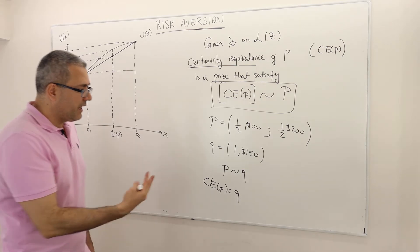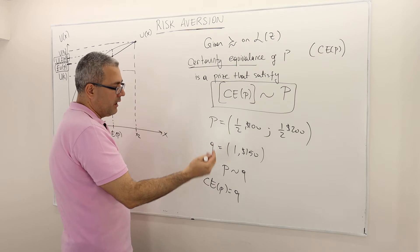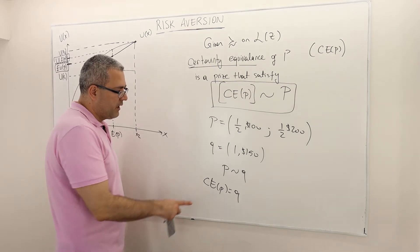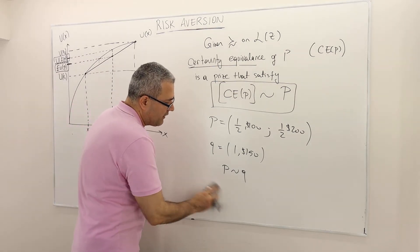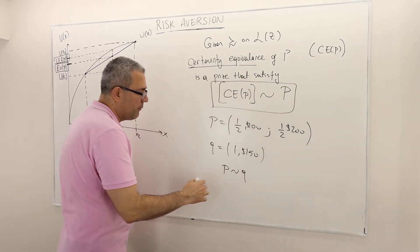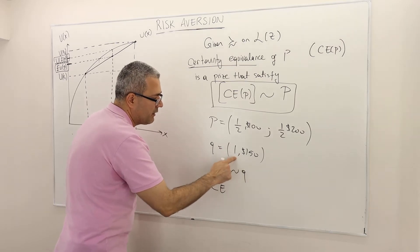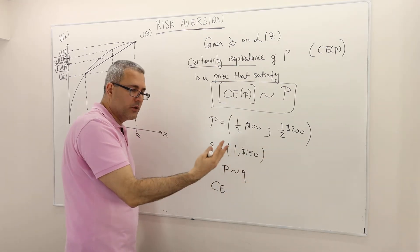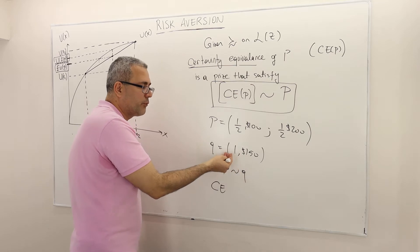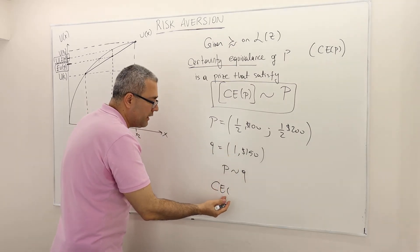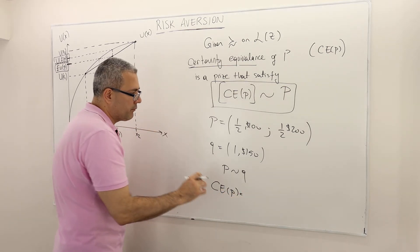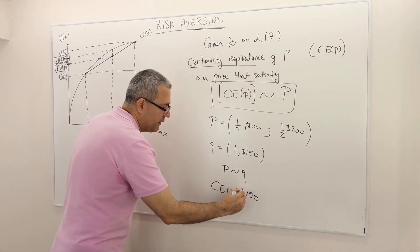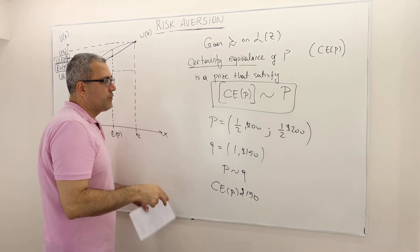That's not quite correct notation-wise, because certainty equivalence is a real number. It's not a lottery, because a lottery has at least two components: a prize and the probability of that prize. So a certainty equivalence of a lottery is just a real number. In this case, it's not exactly Q — it's the prize included in Q, so it's $150.